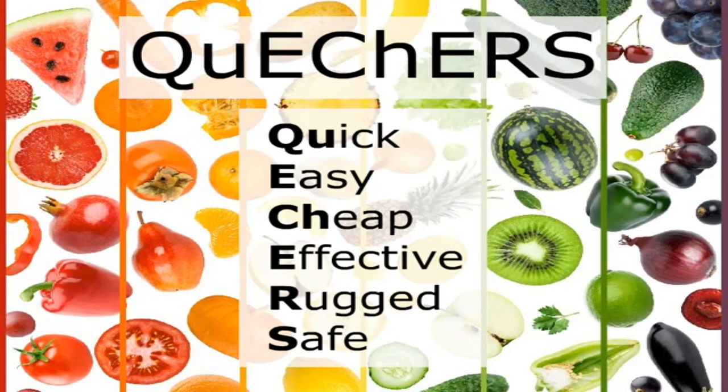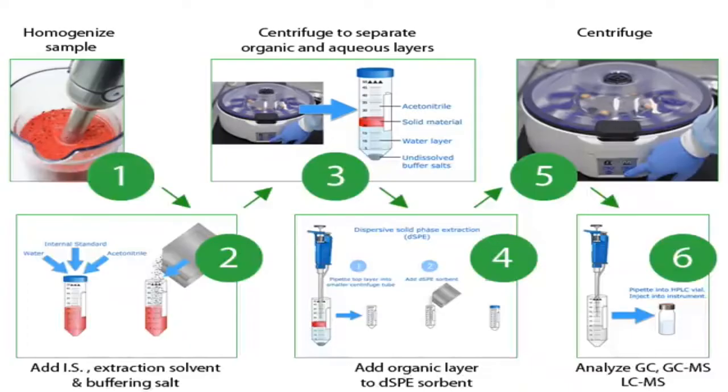This simple two-phase extraction technique is based on salting out followed by dispersive solid phase extraction cleanup. The original method used sodium chloride for salting out, however this was found to give poor recovery for base-sensitive compounds such as the fungicides chlorothalonil and captan.